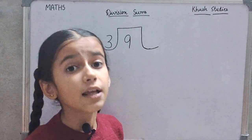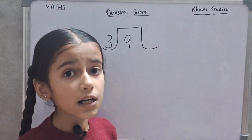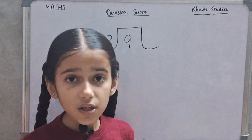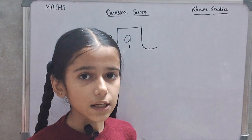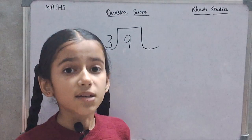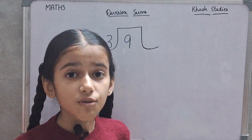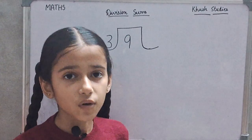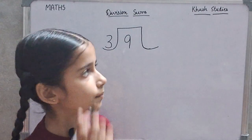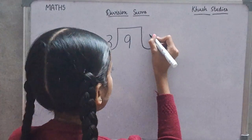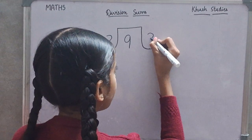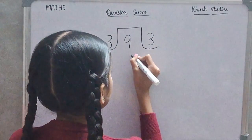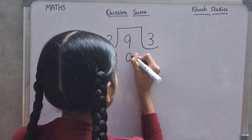Now, we will read the table of 3. 3 zeros are 0, 3 ones are 3, 3 twos are 6, 3 threes are 9. We will write here 3. We will write here 9.